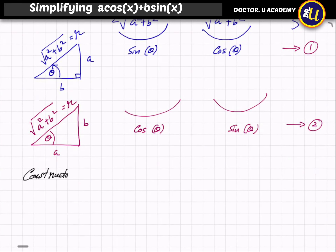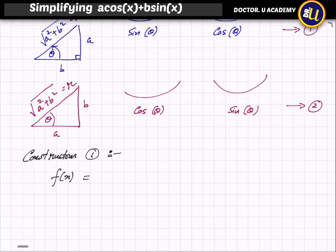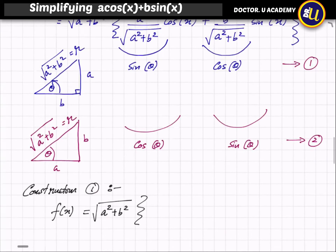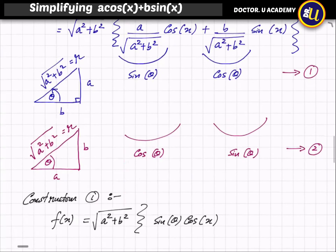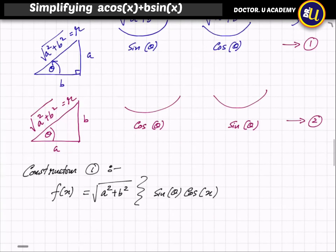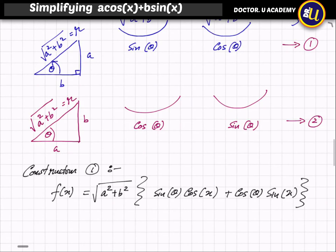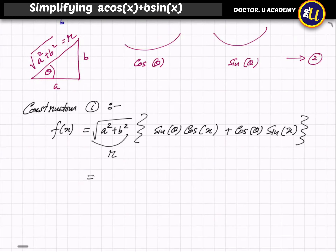Using construction number one, f(x) equals √(a²+b²) times [sin(θ)·cos(x) + cos(θ)·sin(x)]. We can call √(a²+b²) as R, so we get R·[sin(θ)·cos(x) + cos(θ)·sin(x)]. This is a compound angle formula, so this simplifies to R·sin(x + θ).